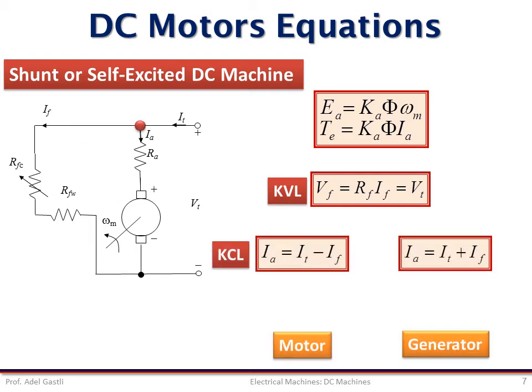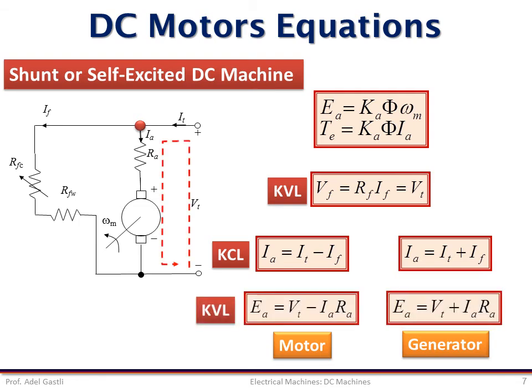The KCL for motor and generator cases give these two equations. In the motoring case, the terminal current is divided into the field and armature currents, while in the generator case, the armature current is the one that splits into field and terminal currents. Finally, the KVL in the armature circuit leads to these two equations. The only difference in these two equations is the plus and minus signs assigned to the armature current.